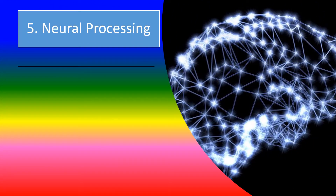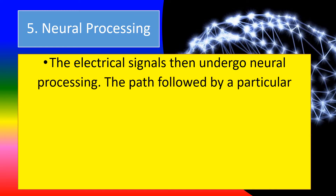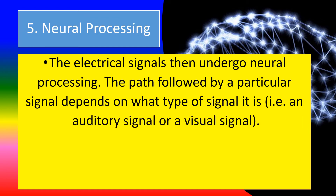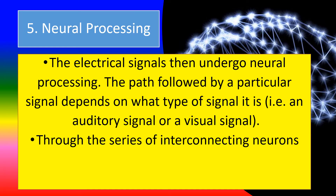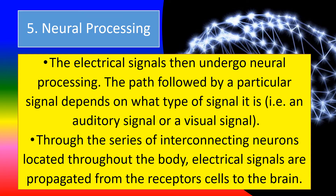Five, neural processing. The electrical signals then undergo neural processing. The path followed by a particular signal depends on what type of signal it is — that is, an auditory signal or a visual signal — through a series of interconnecting neurons located throughout the body. Electrical signals are propagated from the receptor cells to the brain.